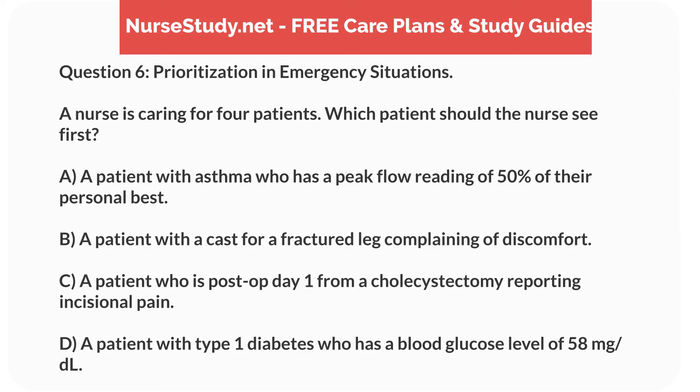Question 6. Prioritization in Emergency Situations. A nurse is caring for four patients. Which patient should the nurse see first? A. A patient with asthma who has a peak flow reading of 50% of their personal best. B. A patient with a cast for a fractured leg, complaining of discomfort. C. A patient who is post-op day 1 from a cholecystectomy reporting incisional pain. D. A patient with type 1 diabetes who has a blood glucose level of 58 mg per deciliter.